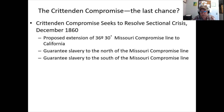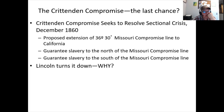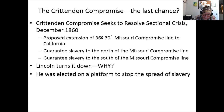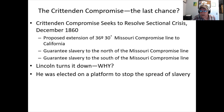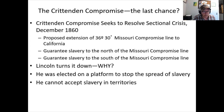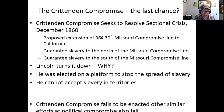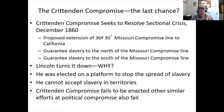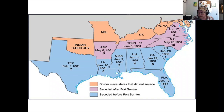Why wouldn't Lincoln accept the Crittenden Compromise? He says: 'I was elected on the platform to stop the spread of slavery and I said so much — if I go back on that now, I become ineffective and unable to stop anything in the future.' He's not going to change his approach. All the last-chance compromises, including Crittenden's, fail.